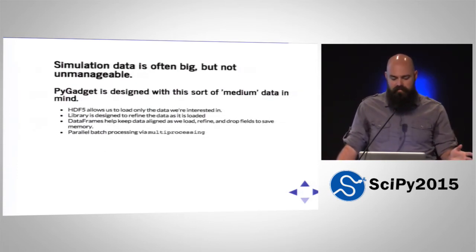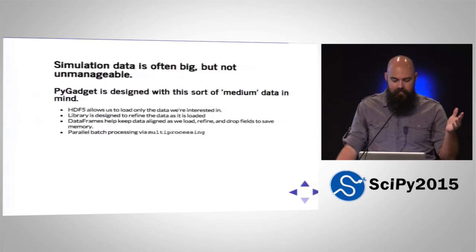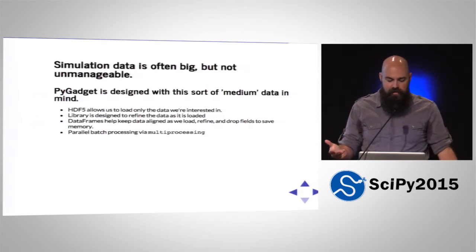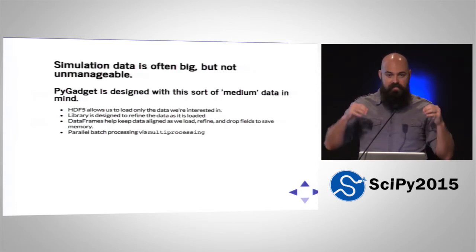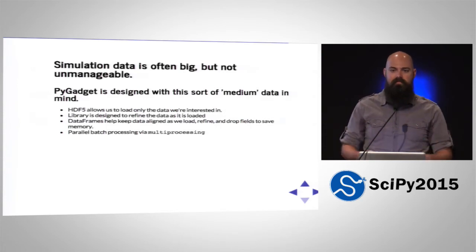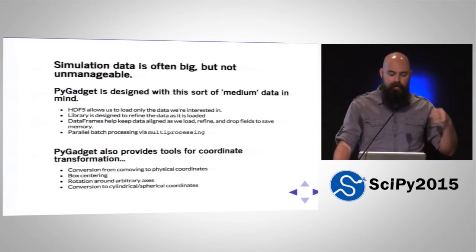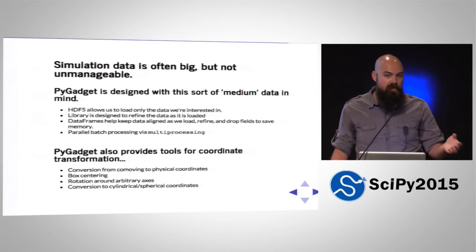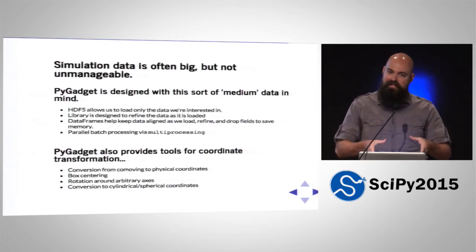Simulation data is often big, but it's not unmanageable. PyGadget is designed with medium data in mind. HDF5 allows us to load only the data we're interested in, and the library is designed to refine the data as it's loaded to save memory along the way so you don't run out — you can actually do this on a laptop. Data frames do a really good job of helping keep data aligned, and you can load, refine, and drop fields interactively. You can also do parallel batch processing via Python's multiprocessing module.